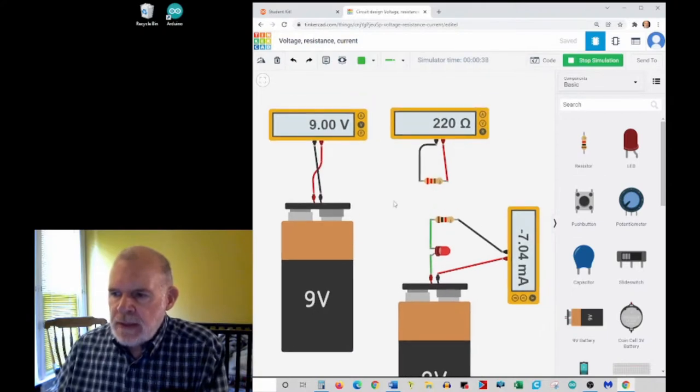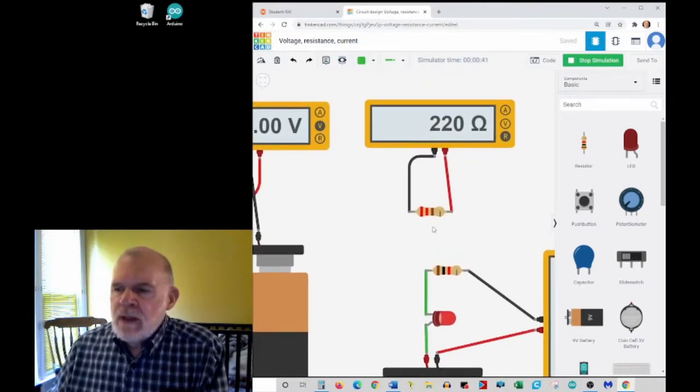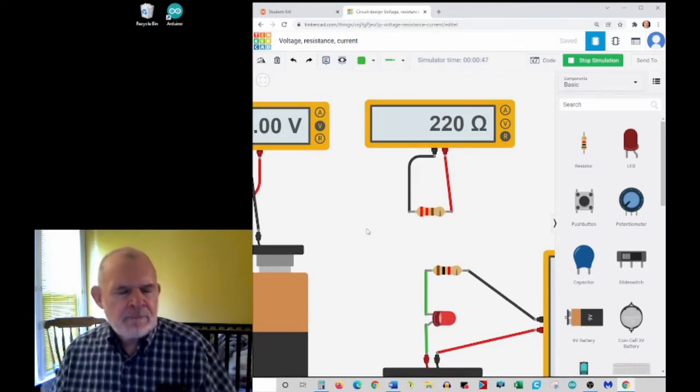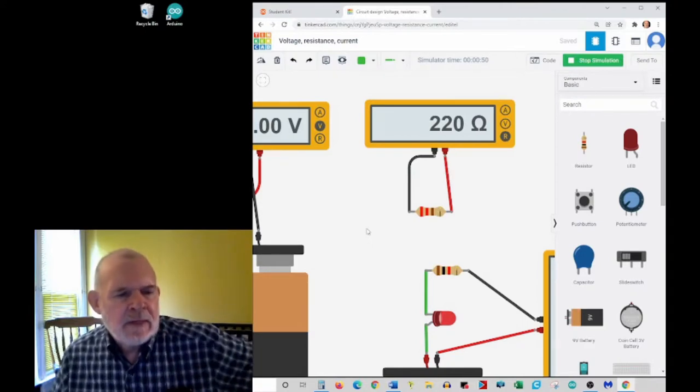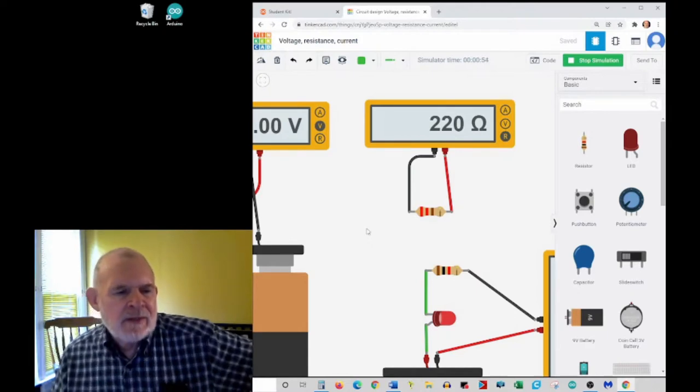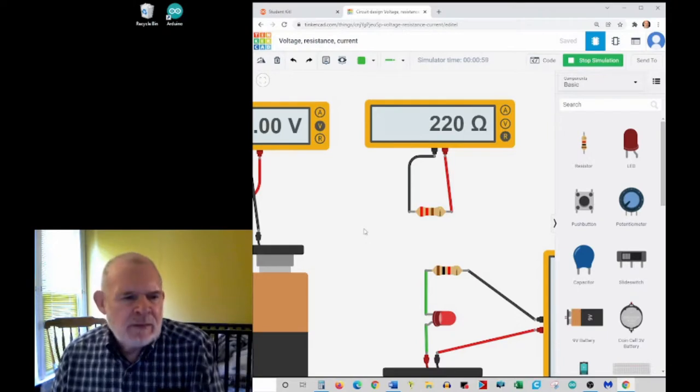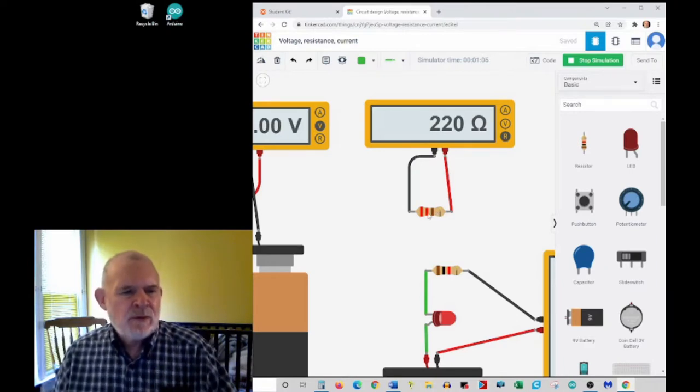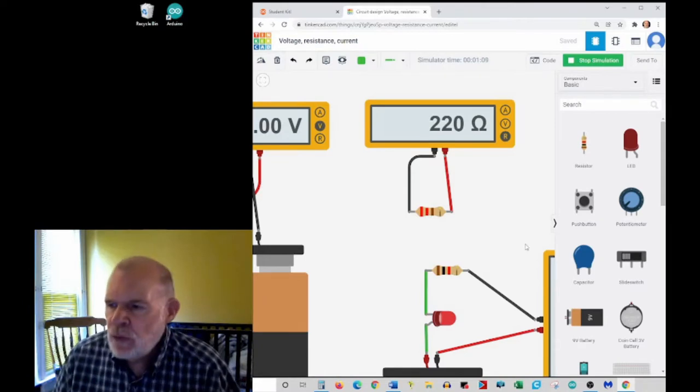Another quantity is resistance. This is the resistance to flow of electrons. Some materials pass electrons from atom to atom easier than others. A piece of wood or rubber is an insulator with very high resistance. Metal is a good conductor with very low resistance. Components called resistors are kind of halfway in between - they resist the flow of electrons in a very controlled way.